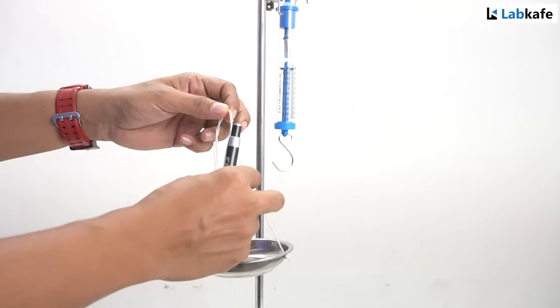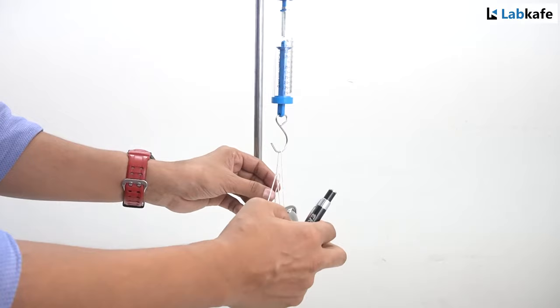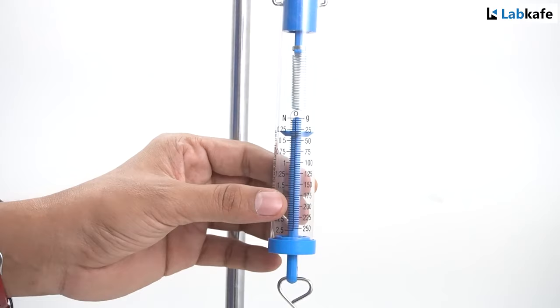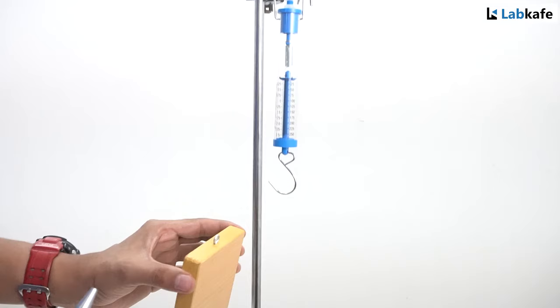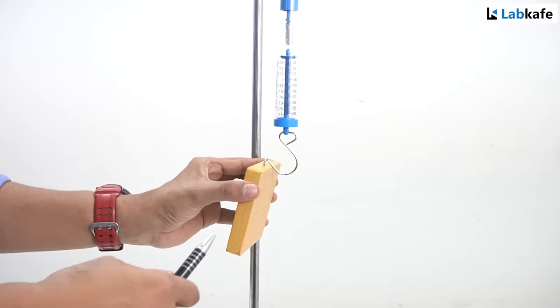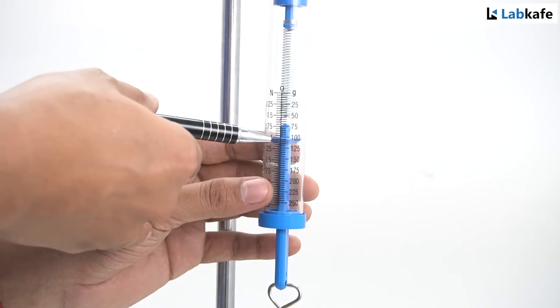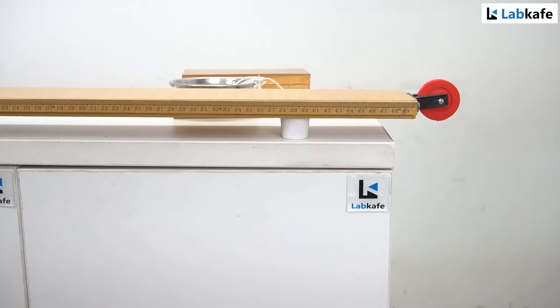First I will hang the pan including the threads on the hook of the spring balance. I can see that the weight of the pan is 30 grams. I can see that the weight of the wooden block is 105 grams. Let's go ahead and perform the experiment.